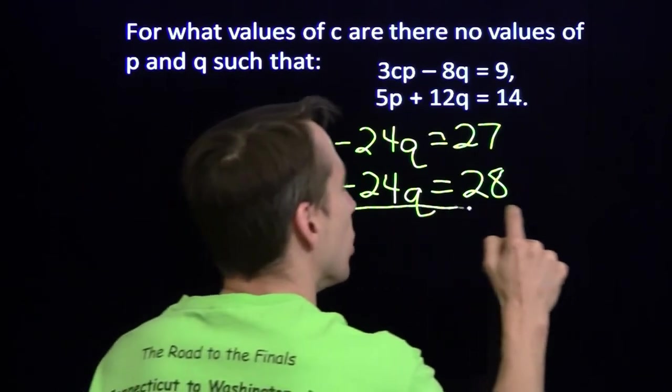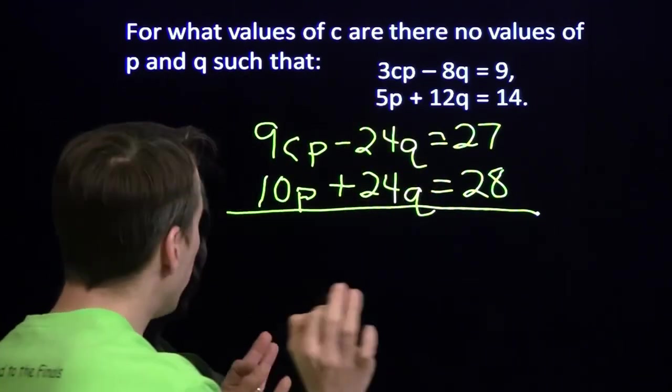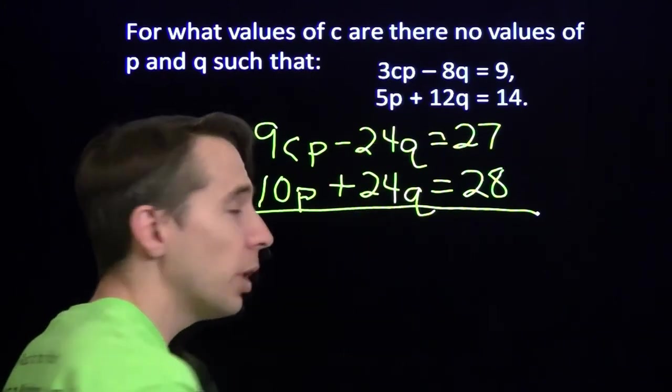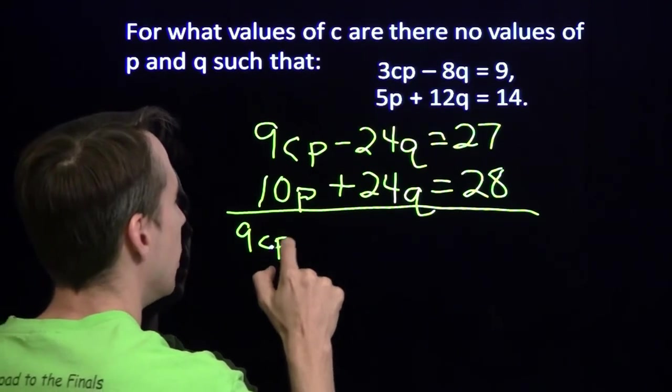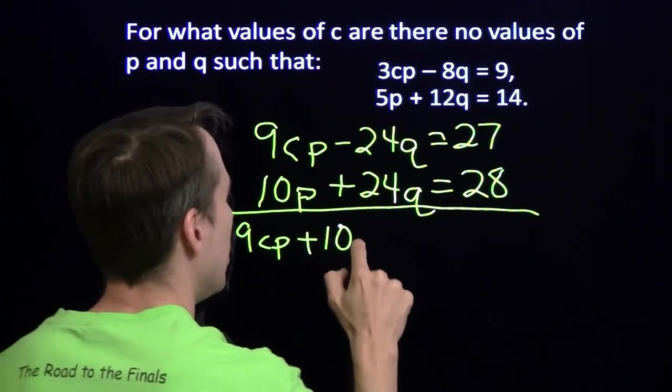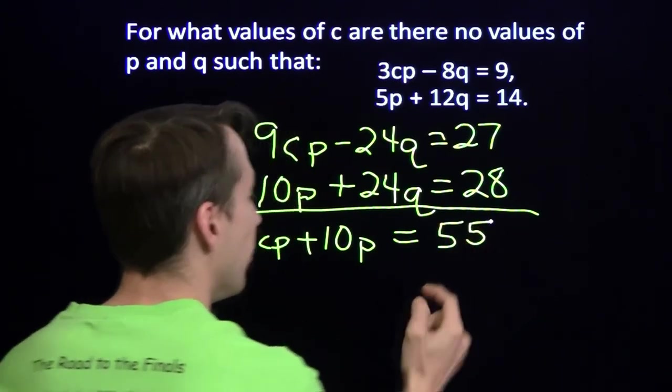Now, when we add these two equations over here on the left, the q's do indeed cancel out, just as planned. Minus 24q plus 24q, gone. And then we have 9cp plus 10p. And over on the right, we have 55.